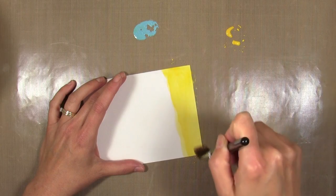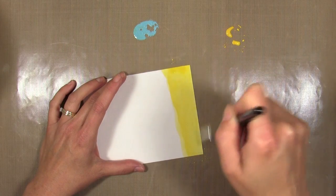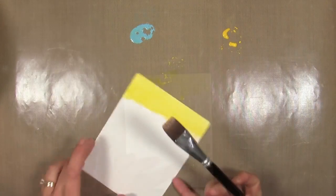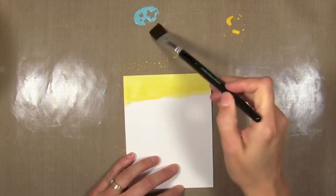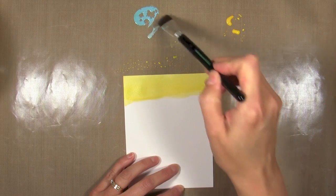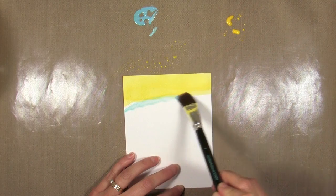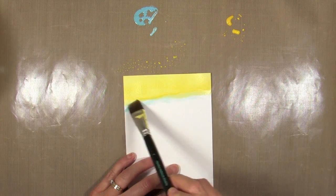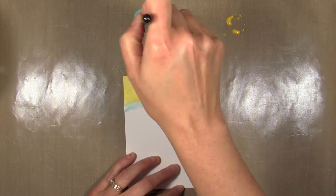When they go on full strength they're pretty opaque, so it's neat to see that you can dilute them and get those washes of color kind of like watercolor. I'm going to clean the brush out and add some of this pretty blue, a soft blue.